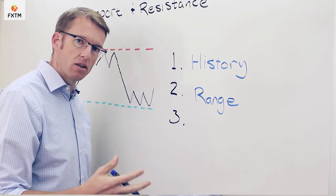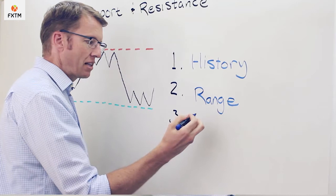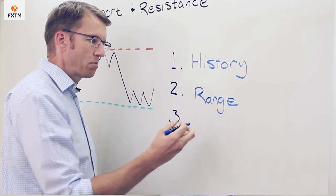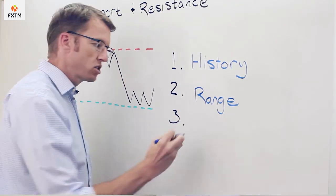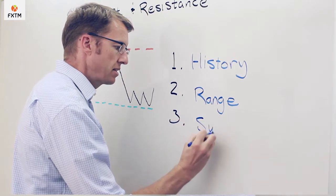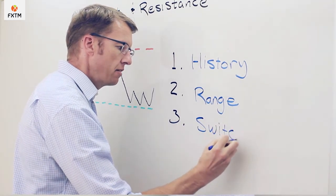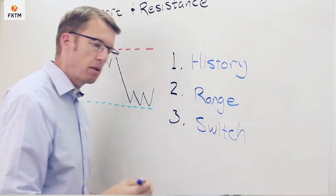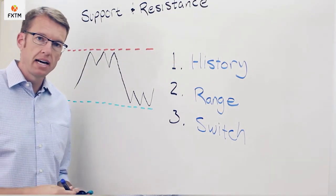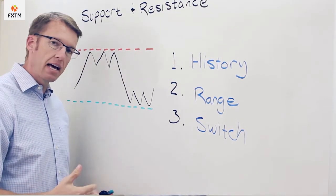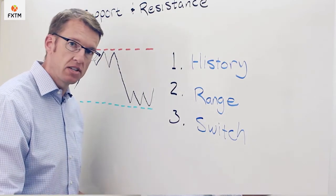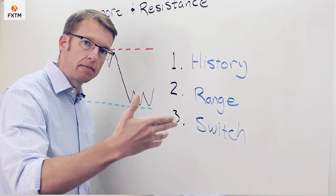Finally, the last thing that we're concerned about here with support and resistance is that they will switch places. As an example, if a price has been respecting a particular price floor or something like that and then comes back to that level after having breached it, it's coming back up to that level from underneath.